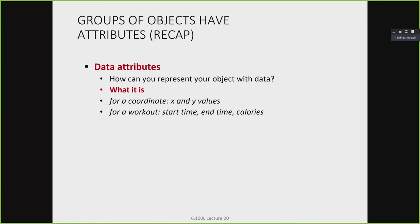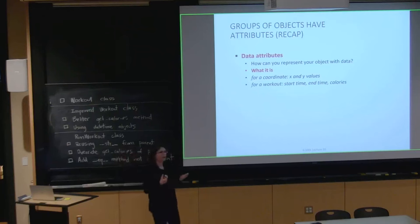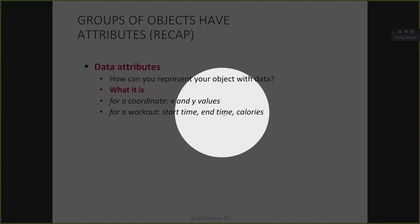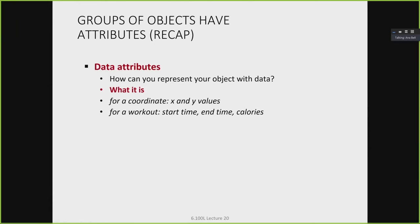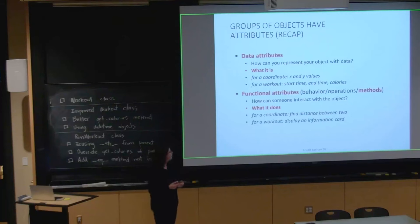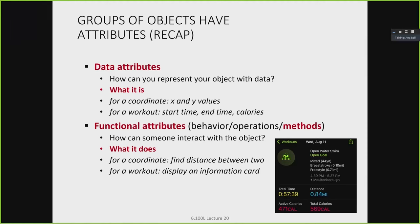We need to decide the data attributes for our workout class: start time as a string, end time as a string, and calories as a number — those three together define the workout object. For functional attributes, we'll have a getter to return calories, a setter to reset them, and a method to display an information card that prints workout details in a nice format.